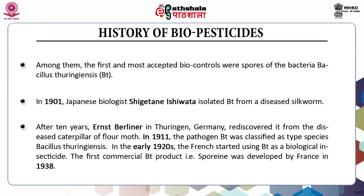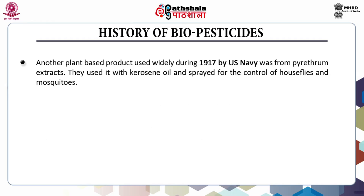In 1911, the pathogen Bt was classified as type species Bacillus thuringiensis. In the early 1920s, the French started using Bt as a biological insecticide. The first commercial Bt product, Sporeine, was developed by France in 1938. Another plant-based product used widely during 1917 by the US Navy was pyrethrum extracts, which they used with kerosene oil and sprayed for the control of house flies and mosquitoes.